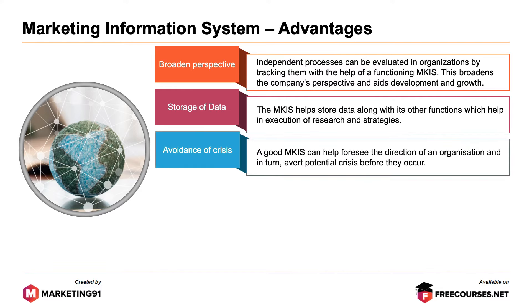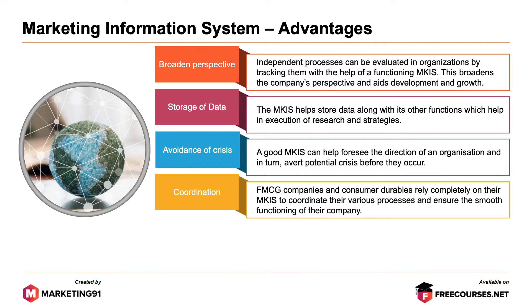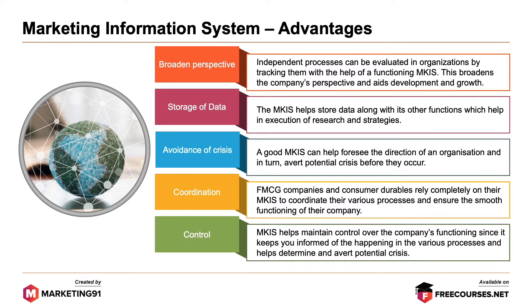Third, avoidance of crisis. A good system can help foresee the direction of an organization and in turn avert potential crisis before they occur. Fourth, coordination. FMCG companies and consumer durables rely completely on their system to coordinate their various processes and ensure the smooth functioning of their company. And finally, control. Marketing information system helps maintain control over the company's functioning since it keeps you informed of the happenings in the various processes and helps determine and avert potential crisis.